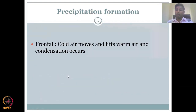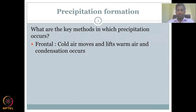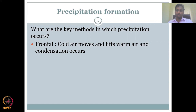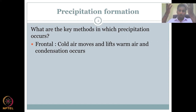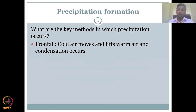The first method is frontal, wherein cold air moves and lifts warm air and condensation occurs. When you have vapour from evaporation, transpiration, or evapotranspiration — where water as a liquid is converted to a vapour phase — it is on the land and must move up. It can move up by cooling, and once it cools down, it condenses into clouds, and further condensation leads to rainfall.